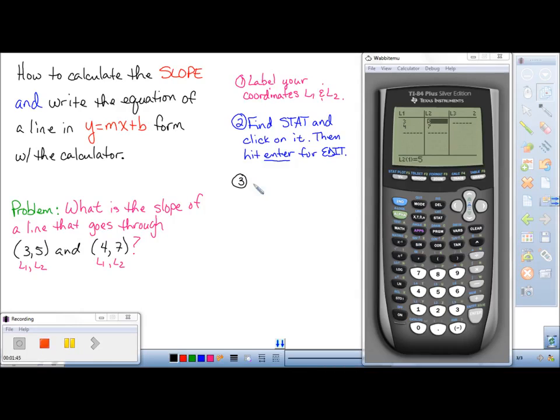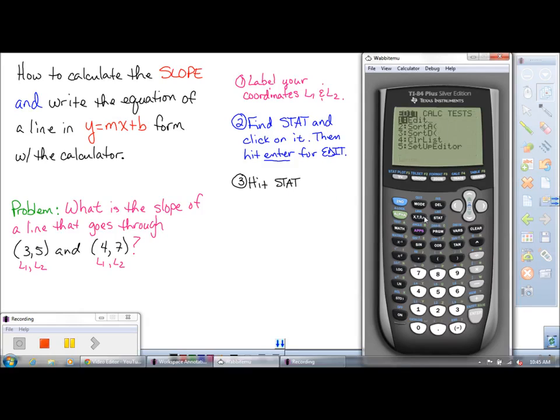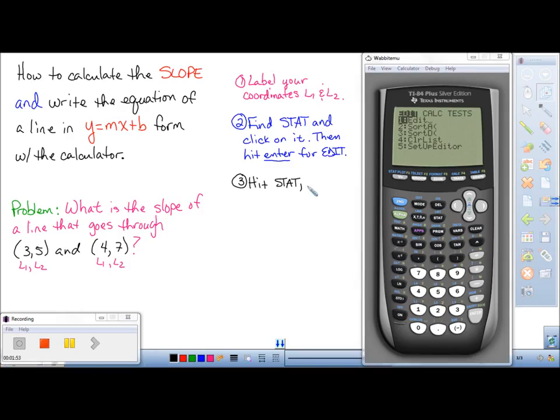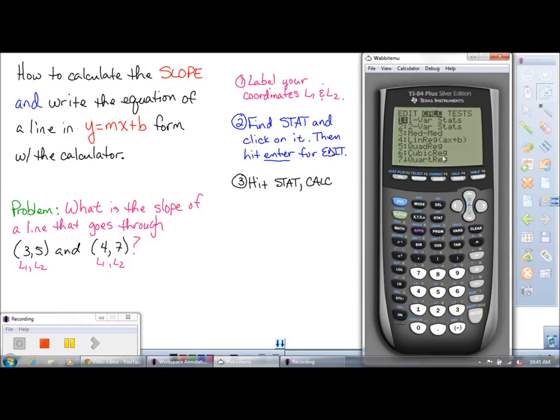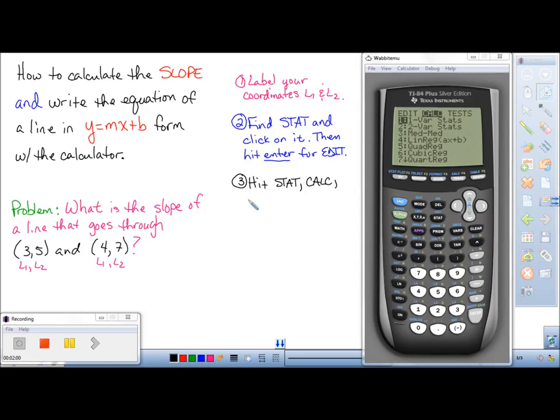And after we get done with that, we're going to go back under stat. So hit the stat button again. And when we hit the stat button, now what we're going to do is we're going to tell the calculator, hey, calculator, I want you to calculate the slope of this line. In this case here, we can do both. We can get the slope and we can get the linear equation here.